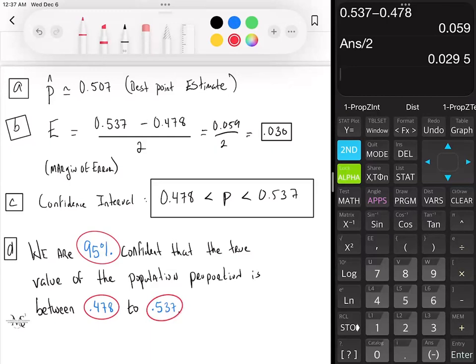Those are the only three things that will change, the numbers basically. The wording, for example, we are confident that the true value of the population proportion is between blank to blank. Everything there that's written in black, that's pretty much going to stay. Whatever is in blue, that's what's going to change. So that's how you do problem number seven in your TI-84.